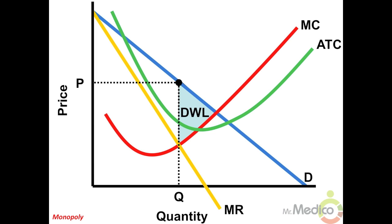Also, the monopolist does not experience productive efficiency because the ATC curve is not at its minimum point at the profit-maximizing level of output.